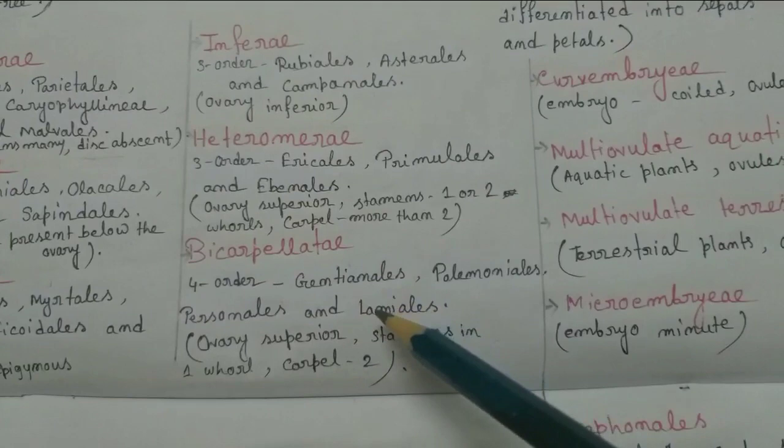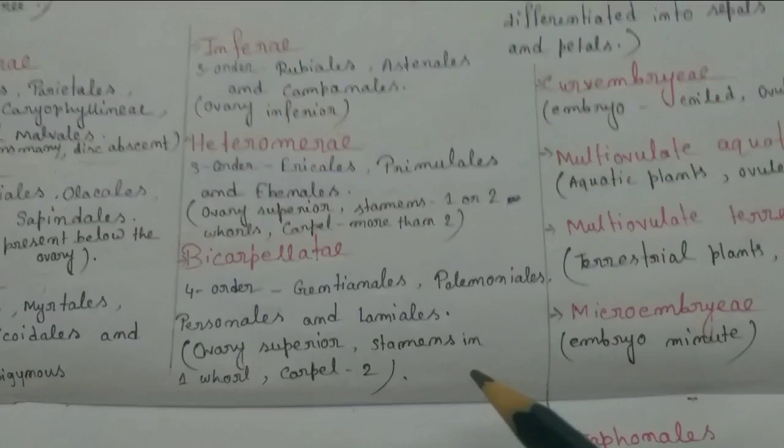Bicarpellatae is further divided into four orders: Gentianales, Polemoniales, Personales, and Lamiales.